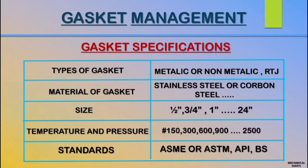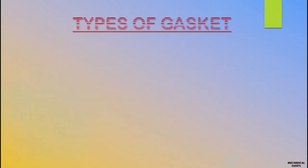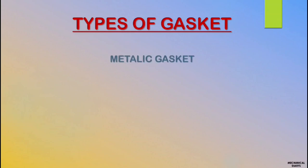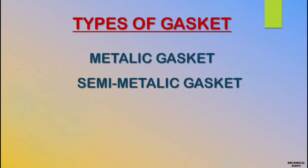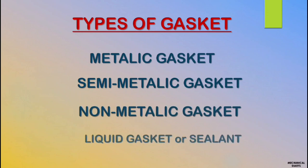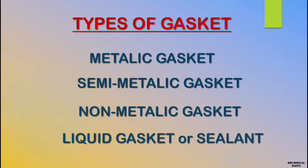You should also know the standard of pipe and flange before starting the job, such as ASME or ASTM standard. Basically there are four types of gasket available in refinery: metallic gasket, semi-metallic gasket, non-metallic gasket, and liquid sealant.